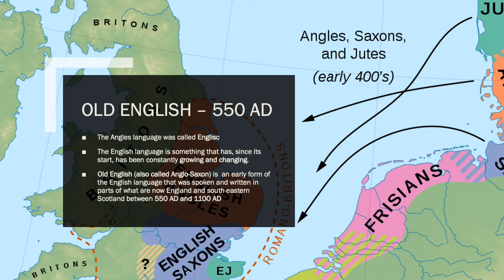The Angles' language was called 'Englisc', but it wasn't spelt the same way as Modern English, nor did it sound the same. Rather than 'S-H' at the end, you've got 'S-C', but S-C can still make the SH sound — so rather than reading 'English', we can read 'Englisc'. Your job now on the form is to write down a couple of words in the English language that also have S-C, usually in the middle of the word, where S-C makes a SH sound.